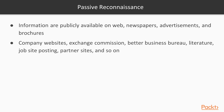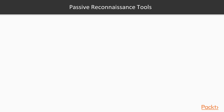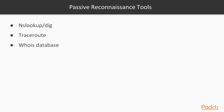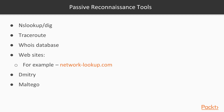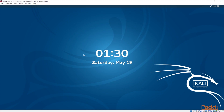Passive reconnaissance uses publicly available information, whether on the internet, newspapers, TV, or wherever. Some of the tools that can be used include NSLookup and its equivalent dig on Kali Linux, traceroute, websites like the WHOIS database or network-lookup.com, and specific Kali Linux tools like Dmitri and Maltego. We're going to start this video by talking about NSLookup and dig.